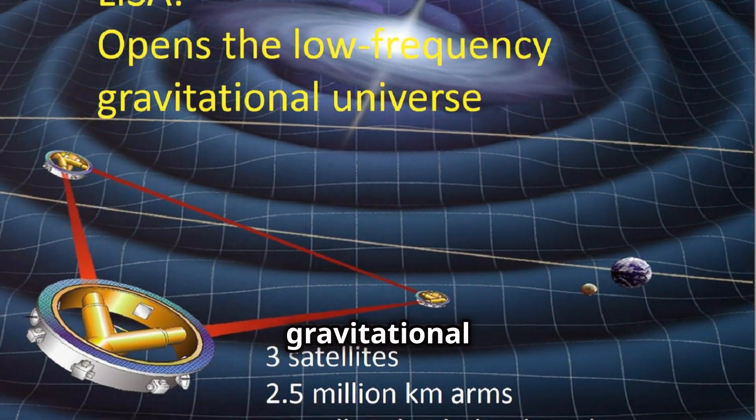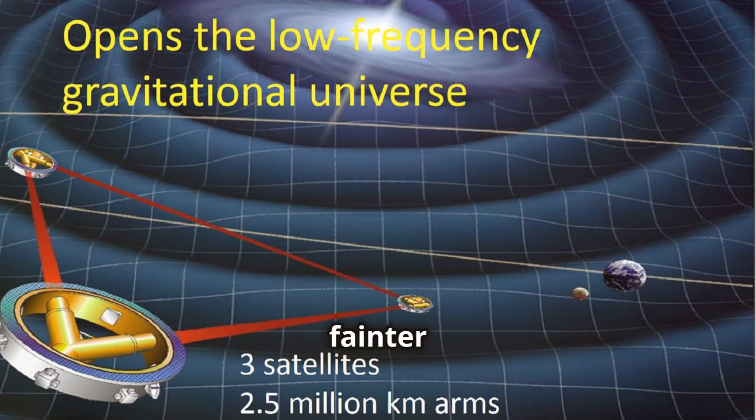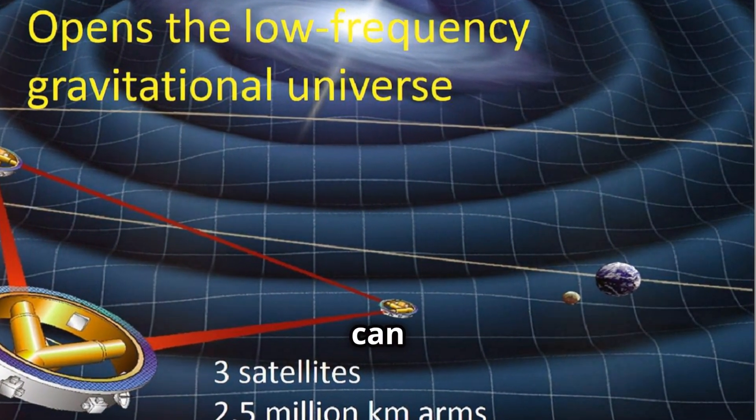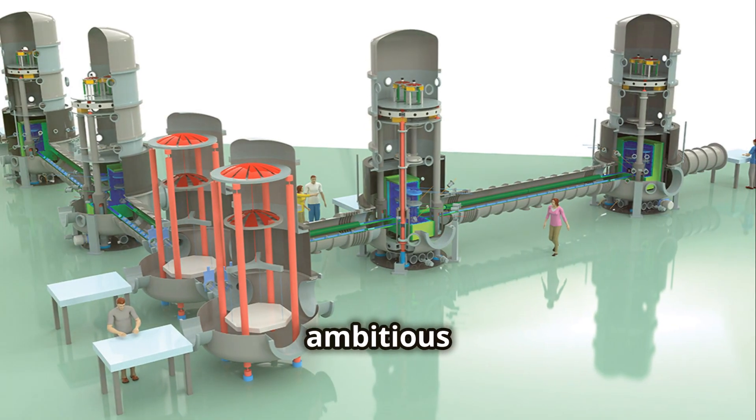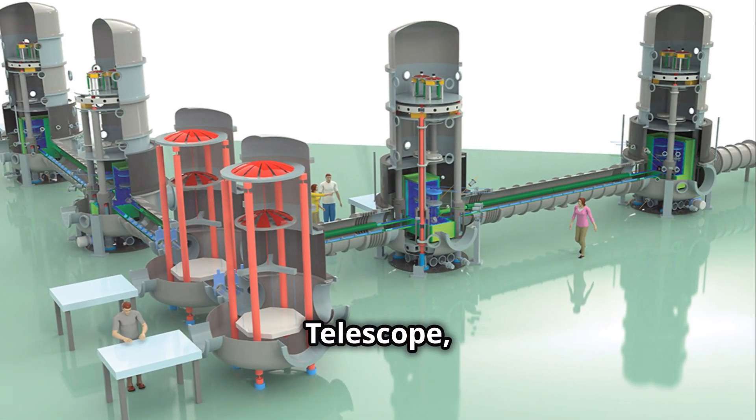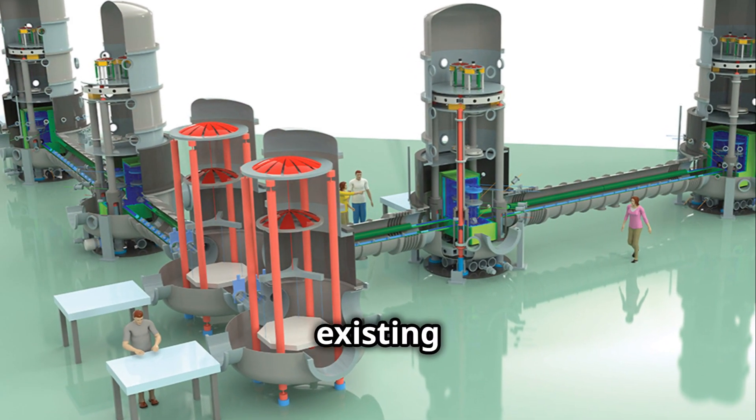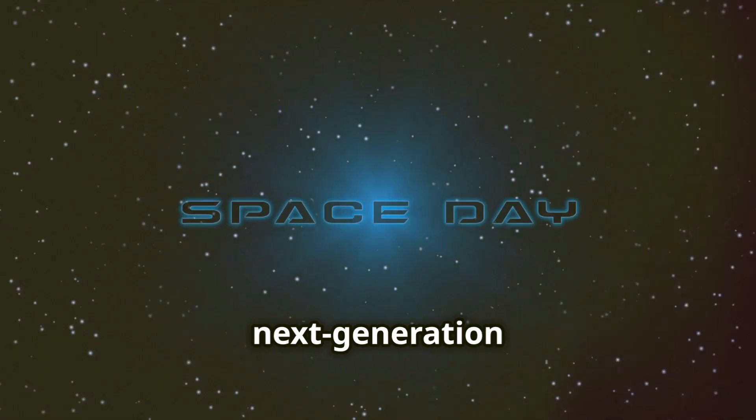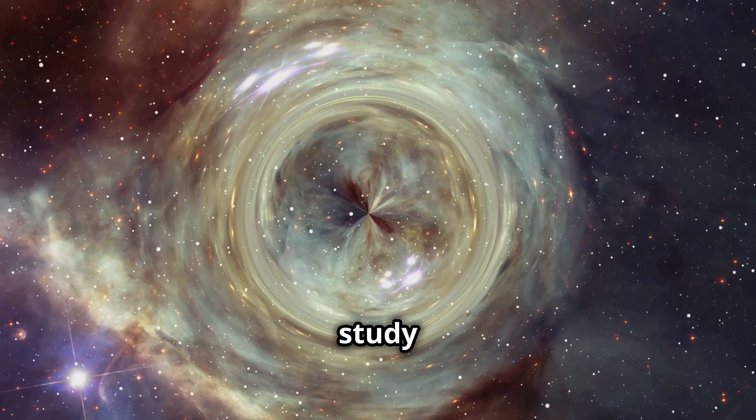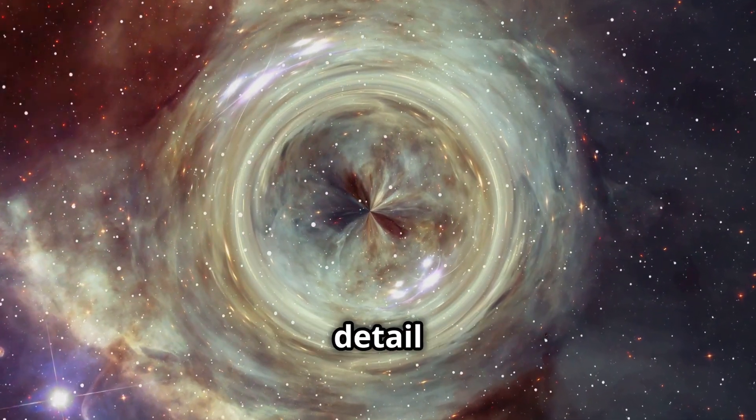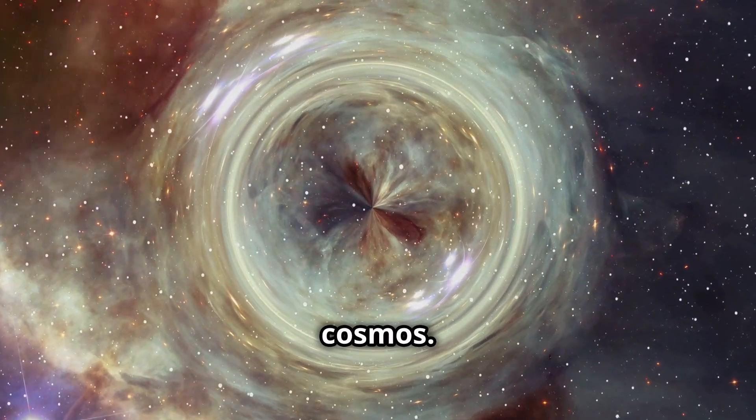LISA will be able to detect gravitational waves from sources that are much fainter and farther away than what we can observe from Earth. Another ambitious project is the Einstein Telescope, a proposed underground observatory that will be even more sensitive than existing interferometers. These next-generation detectors will allow us to study the universe in unprecedented detail and uncover even more secrets about the cosmos.